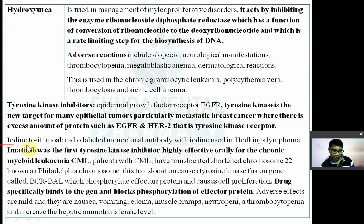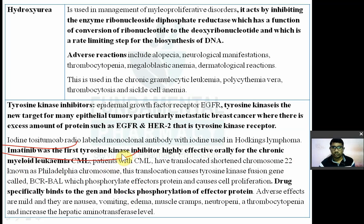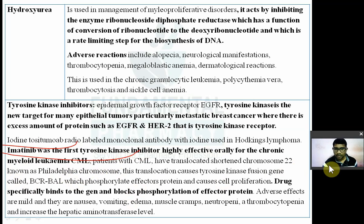Radio-labeled iodine with a monoclonal antibody is used in Hodgkin's lymphoma. Imatinib was the first tyrosine kinase inhibitor and is highly effective orally for chronic myeloid leukemia (CML). Patients with CML have a translocated shortened chromosome 22, known as the Philadelphia chromosome.